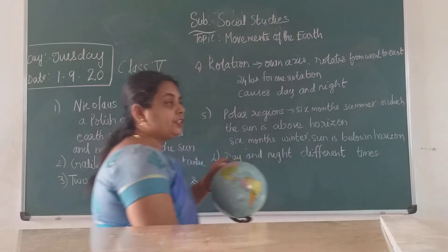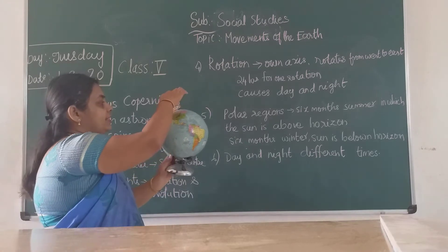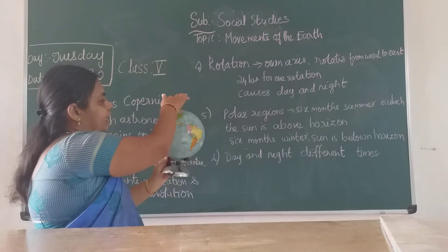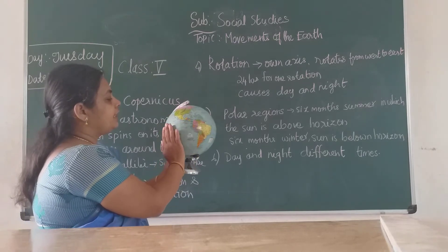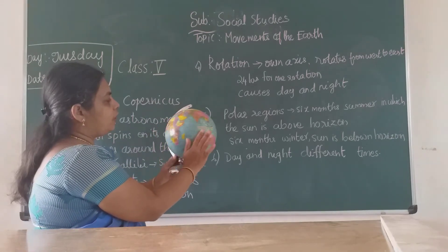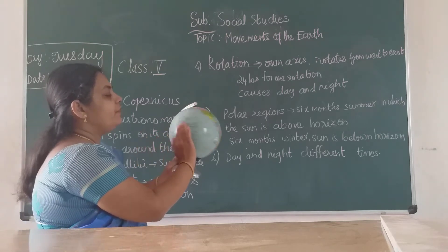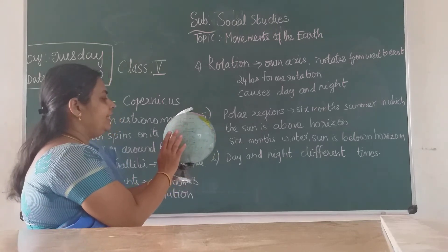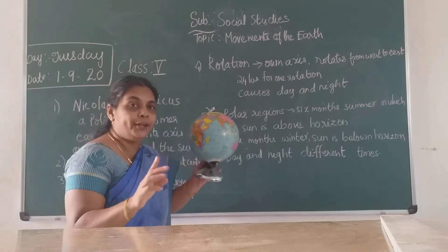Rotation means the earth rotates on its own axis. Using the globe, I will show you — this is your axis from North Pole to South Pole, one imaginary line. The earth rotates on its own axis from west to east.